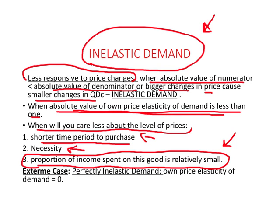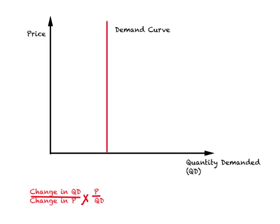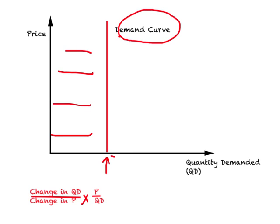In an extreme case, when price changes and nothing happens to demand, own price elasticity of demand exactly equals 0. This is referred to as perfectly inelastic demand. Consider a demand curve which is vertical — the consumer wants a fixed number of units of a good and is willing to pay any price for it. There is no change in quantity demanded irrespective of the price. This is an example of perfectly inelastic demand.